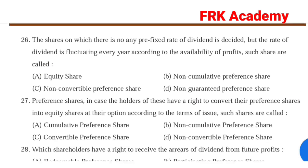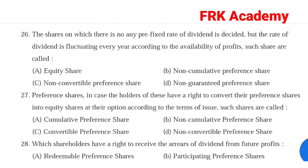Question 27: Preference shares where holders have the right to convert their preference shares into equity shares according to the terms of issue — such shares are called. Answer: Option C, convertible preference shares.